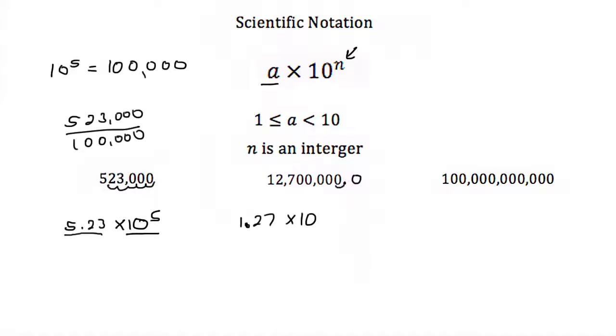So this time we'd move it 1, 2, 3, 4, 5, 6, 7 times. So 12,700,000 then would be 1.27 times 10 to the 7th.